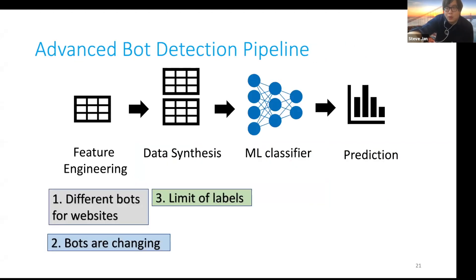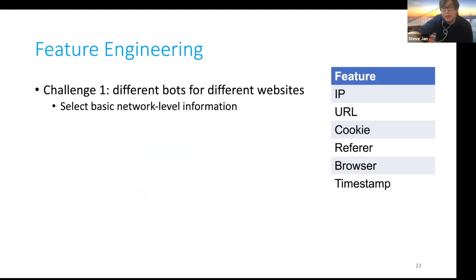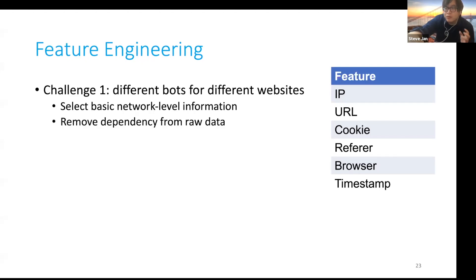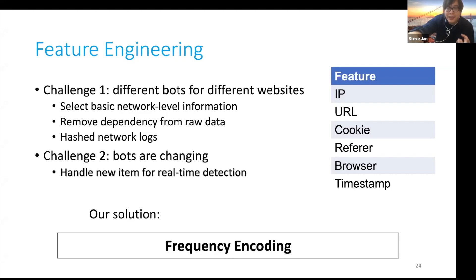In order to catch advanced bots, we design a pipeline with several steps, each trying to solve different challenges. First, feature engineering — it tries to solve the problem of different bots across different websites and bots changing over time. Since detection needs to be generalizable, we only select basic network features instead of highly specific ones. For each feature, we remove dependencies so it does not rely on raw data. Our data is hashed, which is common when companies share data with researchers. Second, because bots are changing dynamically, we need to handle new items for real-time detection. We present a frequency encoding scheme to address these two challenges.